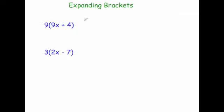Let's have a look at another one. 9 bracket 9x plus 4. Well to expand this you're going to do 9 times 9x — well 9 times 9 is 81, so 9 times 9x is 81x. And then 9 times 4, well 9 times 4 is 36. So the answer would be 81x plus 36.